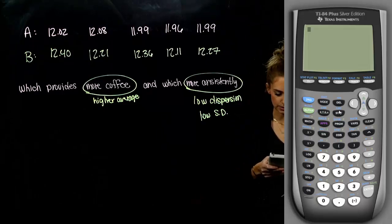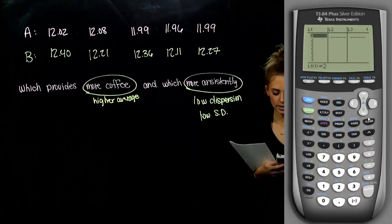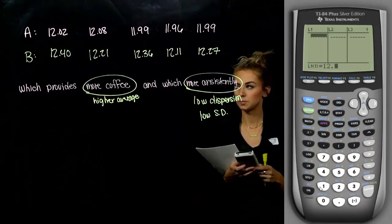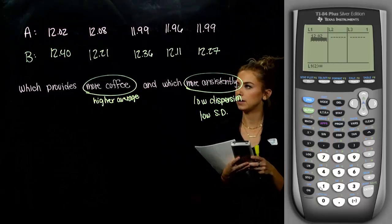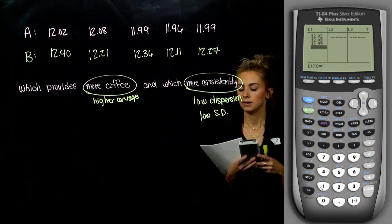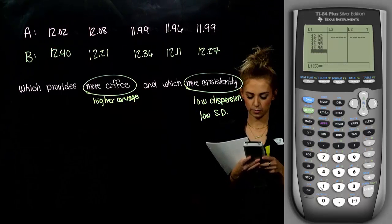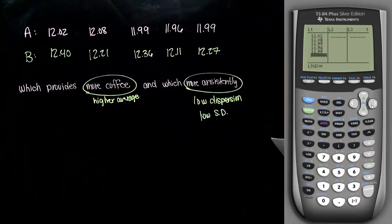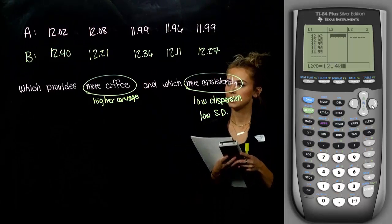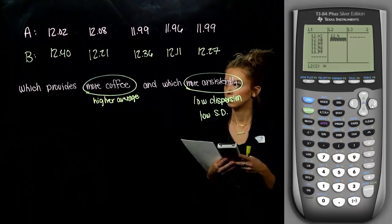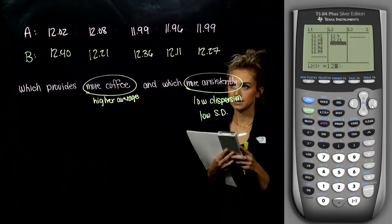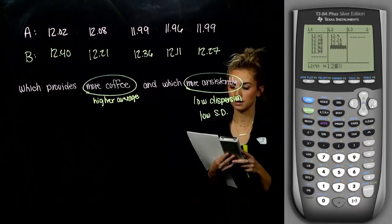Go into STAT, edit your lists, and clear the previous data. List 1 is company A: 12.02, 12.08, 11.99, 11.96, 11.99. Click over to list 2 for company B: 12.40, 12.21, 12.36, 12.11, and 12.27. Before even calculating, we can see that B's numbers are higher than A's, so B will have the higher average.